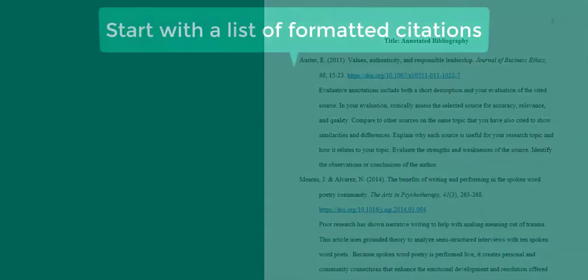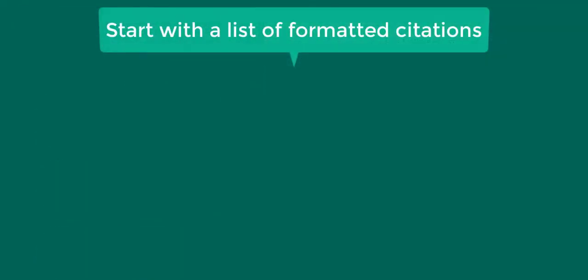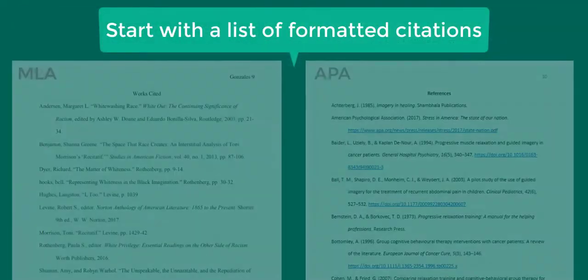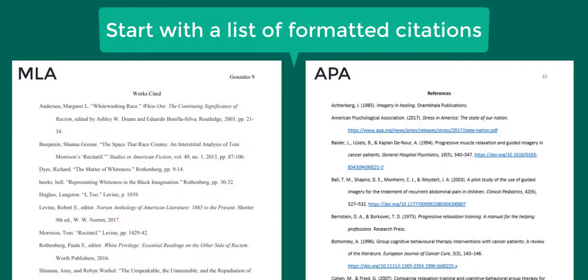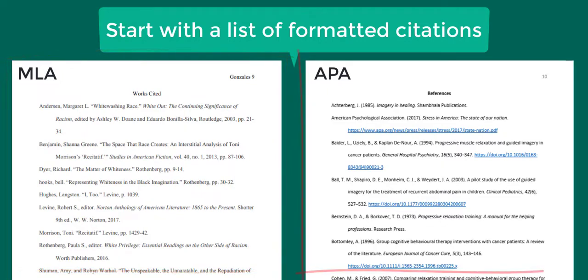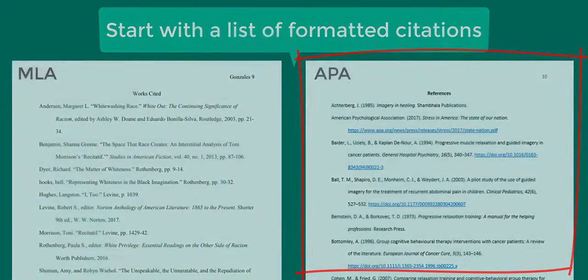Start creating your annotated bibliography by formatting citations for the sources you are using. In MLA format, this is the same as your works cited page. In APA format, this is the same as your references list.